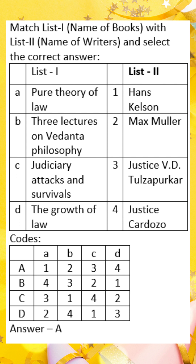Here are some of the key features of Kelsen's pure theory of law. Law is a system of norms. Norms are statements that prescribe how people should behave. Kelsen argued that law is different from other types of norms, such as moral norms and social norms, in that it is backed by the coercive force of the state.